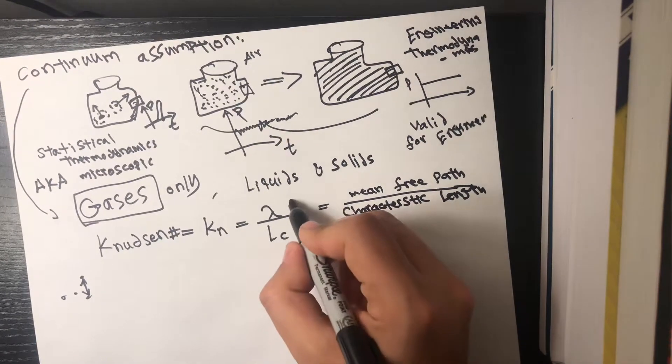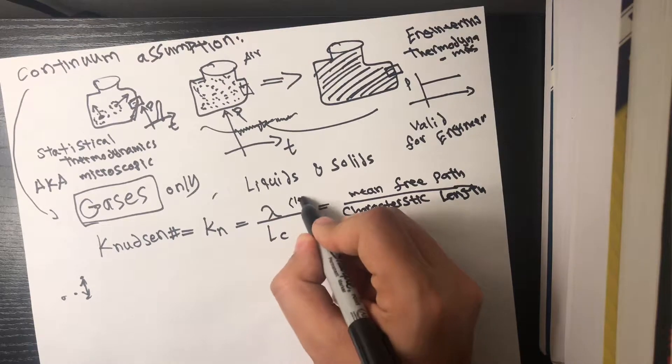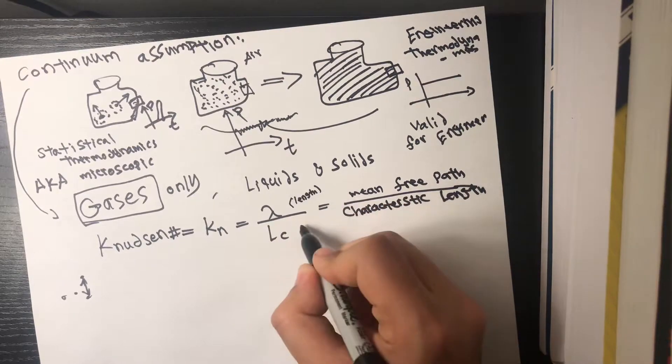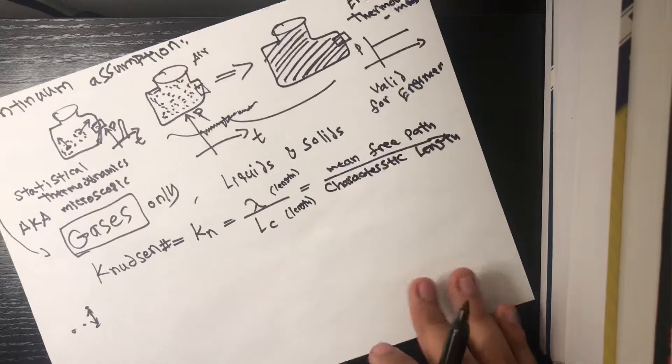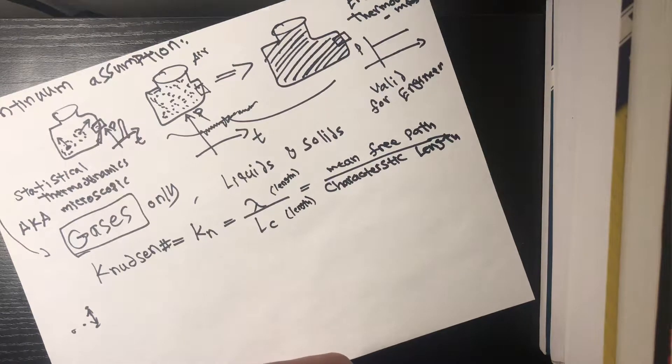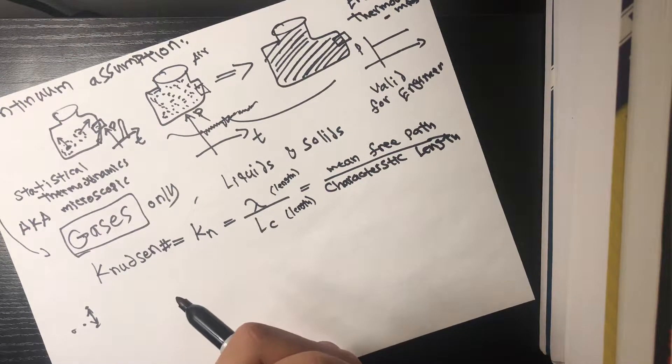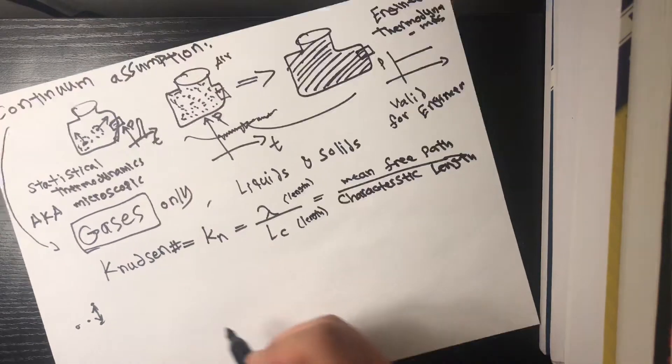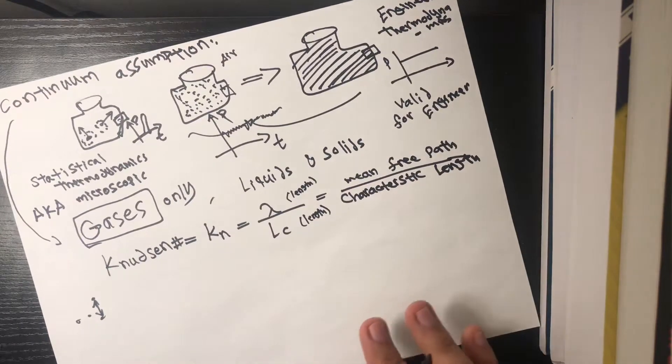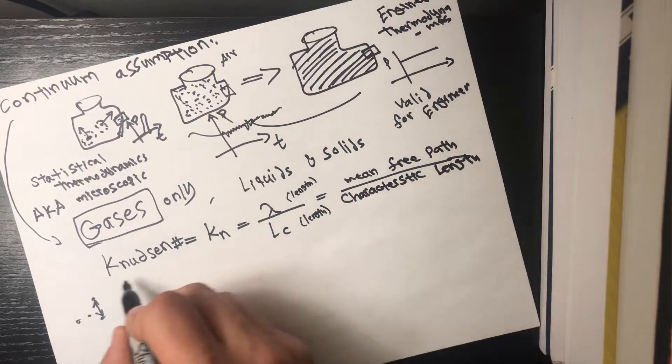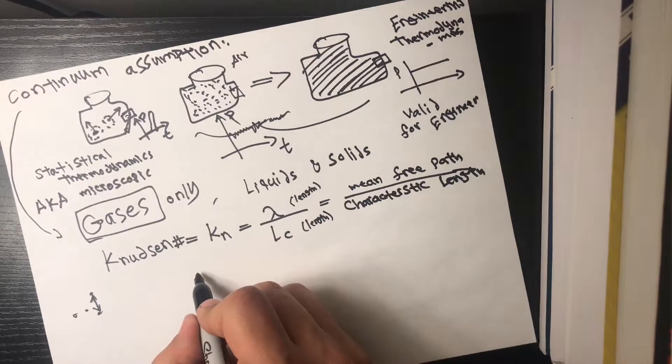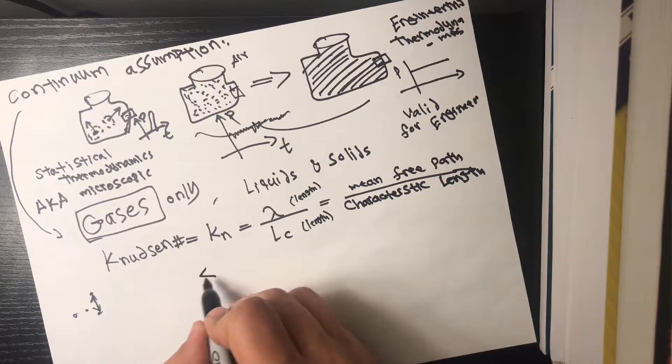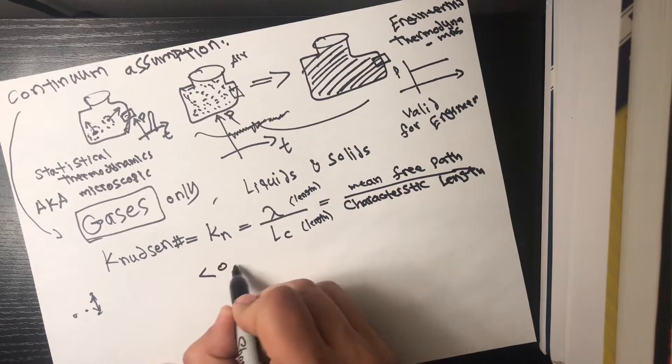So the Knudsen number ends up being in units of length over length. So you're gonna have usually in this situation to the right, and even the situation to the left, you're gonna have very small numbers. But for the situation on the right, you're usually gonna have on a scale of nanometer, which means this number is usually very small for a continuum valid problem. This number is usually smaller than 0.01.